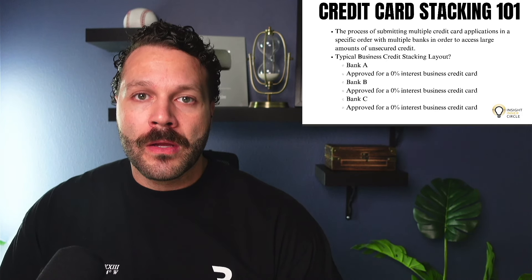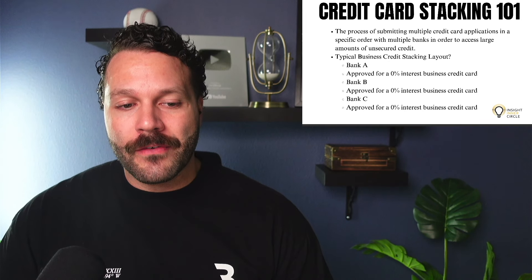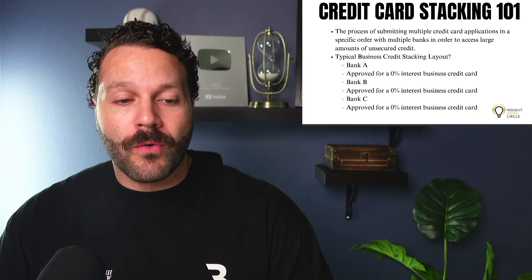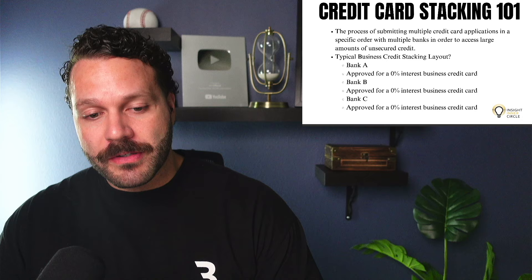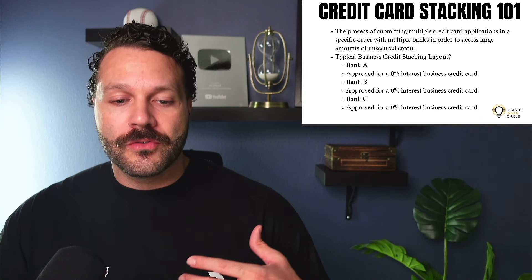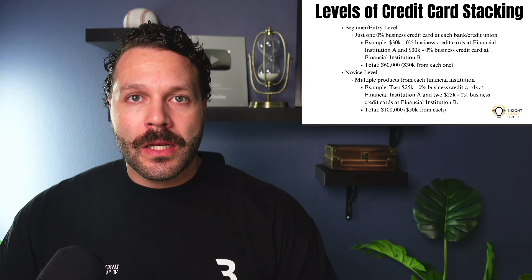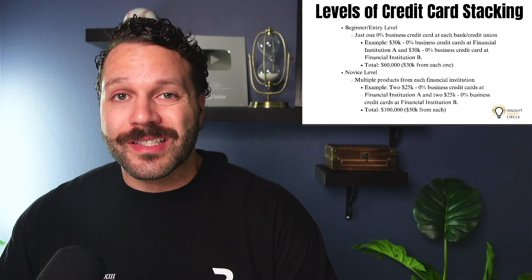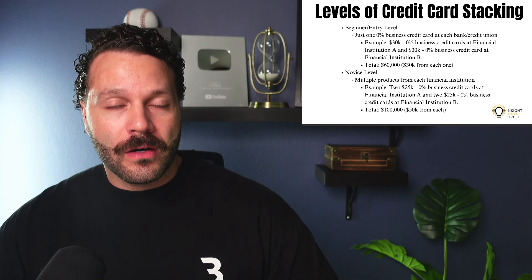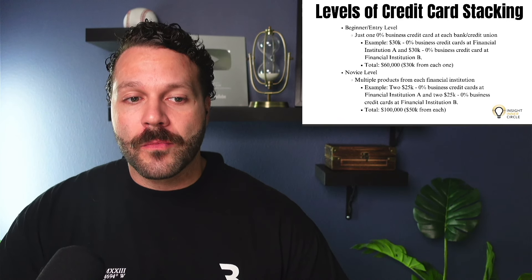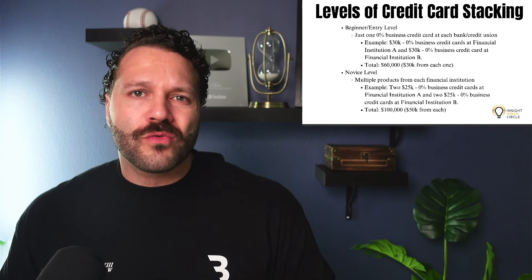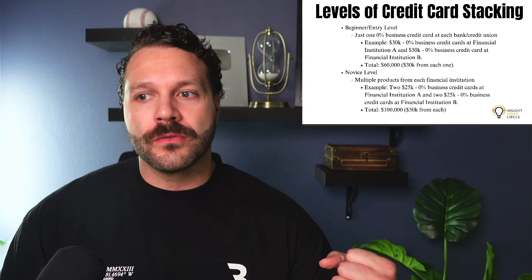Here's a typical business credit card stacking layout. You have Bank A — approved for a zero percent business credit card. Bank B — approved for a zero percent business credit card. Bank C — approved for a zero percent business credit card. We're not trying to overcomplicate it. There are levels to credit card stacking. If you're a complete startup, this is a nice way to dip your toes in and get access to that first $15,000 or $20,000 business credit line, and eventually venture into term loans or business lines of credit.